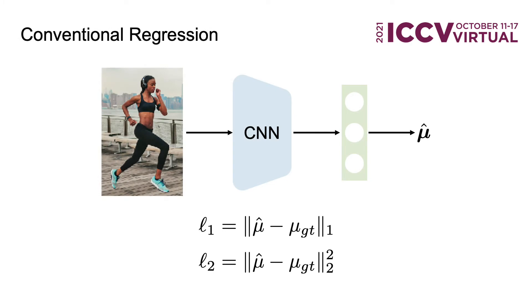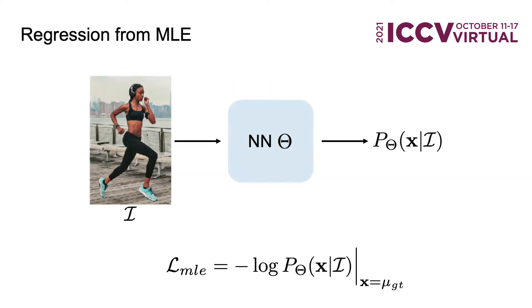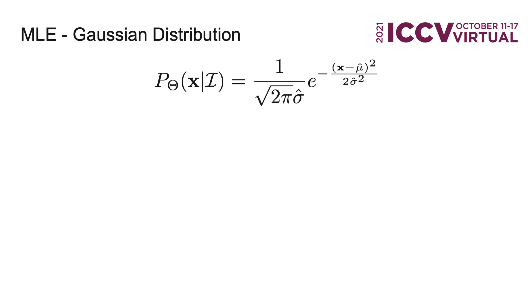Let's start with conventional regression. In the conventional method, L1 and L2 loss is directly applied to the model output, and we don't have a guide to choose the proper loss function — it is only based on our experience. But when we look into this problem from the perspective of maximum likelihood estimation, different regression losses are actually different assumptions of the output distribution. The network is predicting a density function that indicates the probability of the regression value.